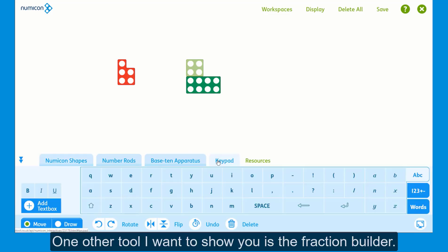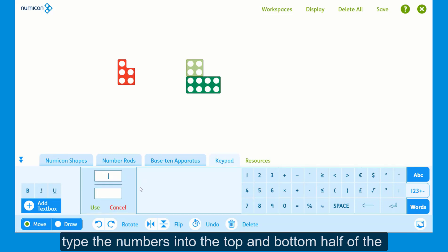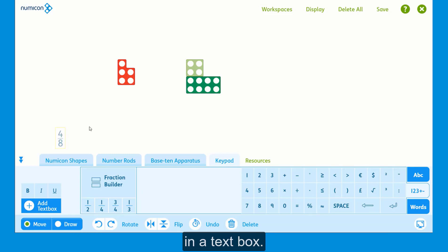One other tool I want to show you is the Fraction Builder. Make fractions like this using the Fraction Builder tool. Type the numbers into the top and bottom half of the Fraction tool, then press Use. Your Fraction appears in the text box.